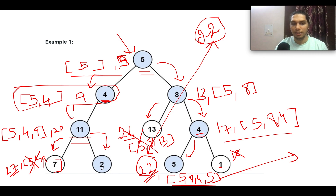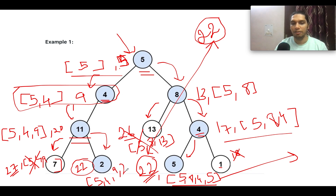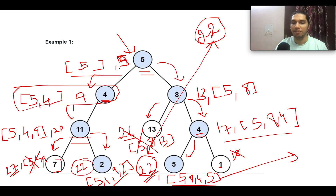Going right: 20 plus 2 gives 22. The running sum equals the target value. The running list is [5, 4, 9, 2], which gives us the second valid answer. In total there are two possibilities: [5, 8, 4, 5] and [5, 4, 9, 2], which matches our expectation.